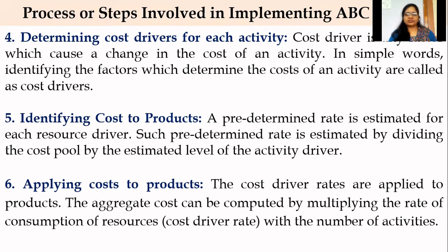The next step is identifying cost to products. A predetermined rate is estimated for each resource driver by dividing the cost pool by the estimated level of cost driver. Finally, applying costs to products: the cost driver rates are applied to products, and the aggregate cost is computed by multiplying the cost driver rate with the number of activities. These steps will be better understood when solving practical problems.